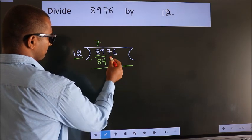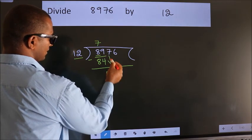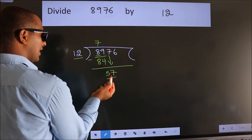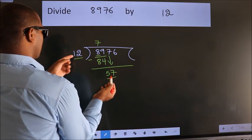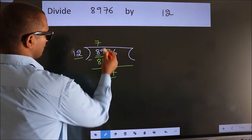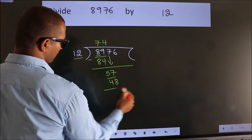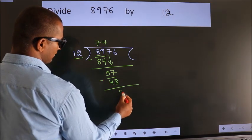After this, bring down the beside number. So, 7 down. So, 57. A number close to 57 in the 12 table is 12 fours, 48. Now, we subtract. We get 9.